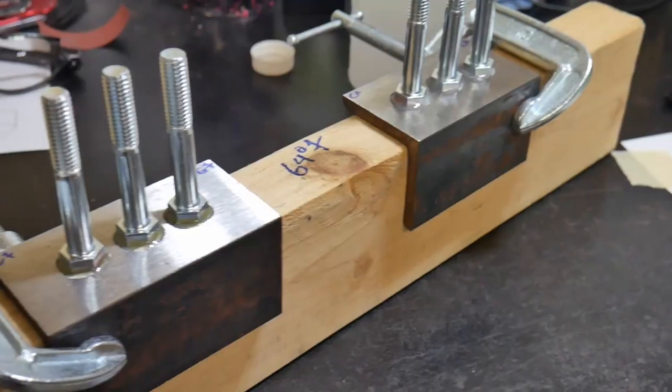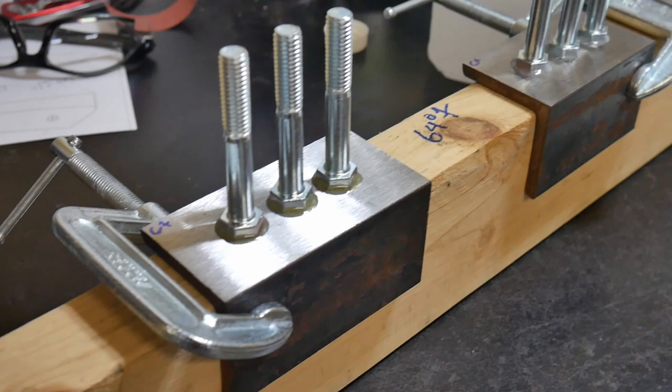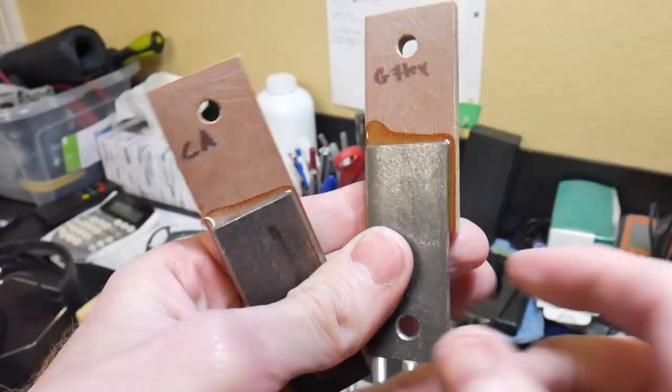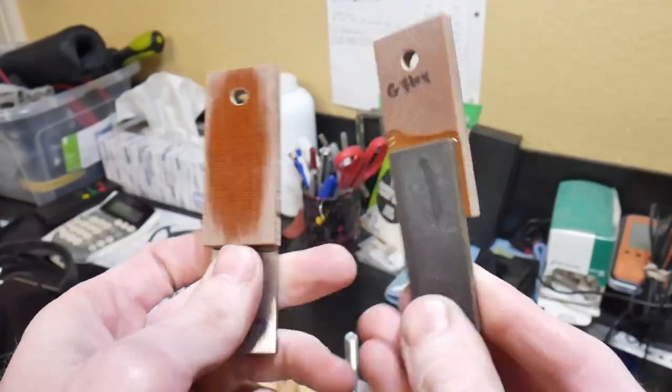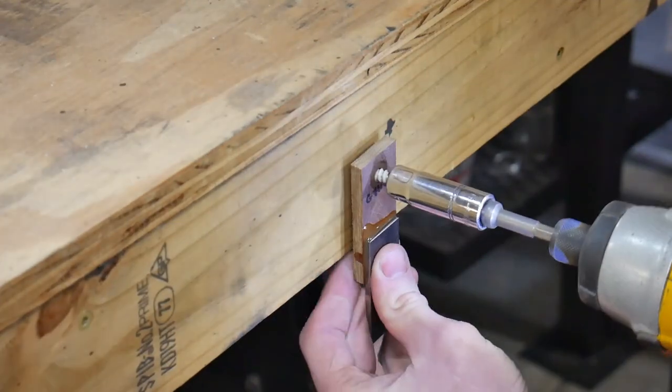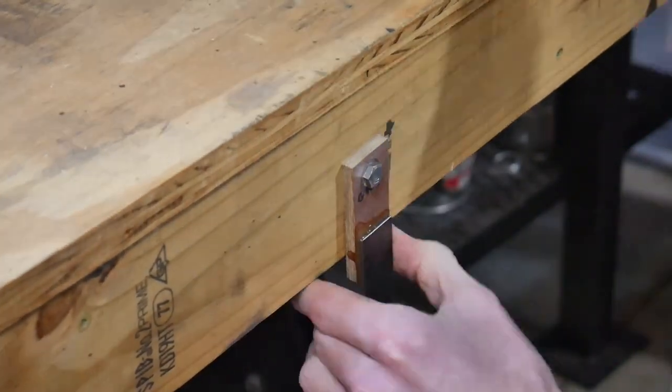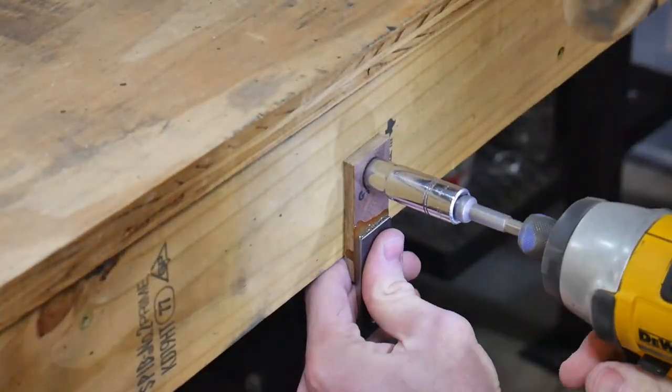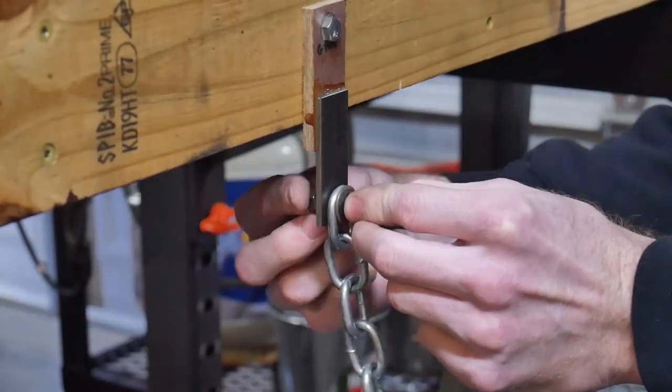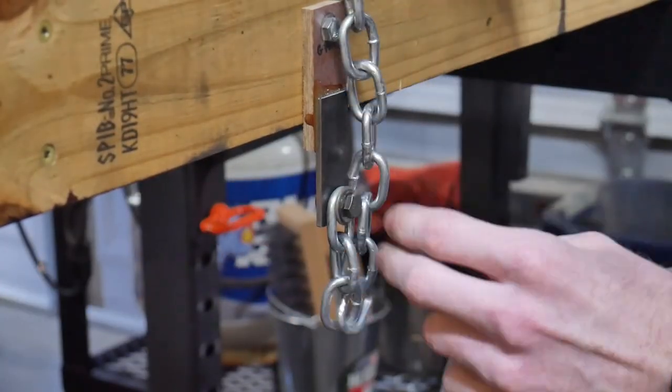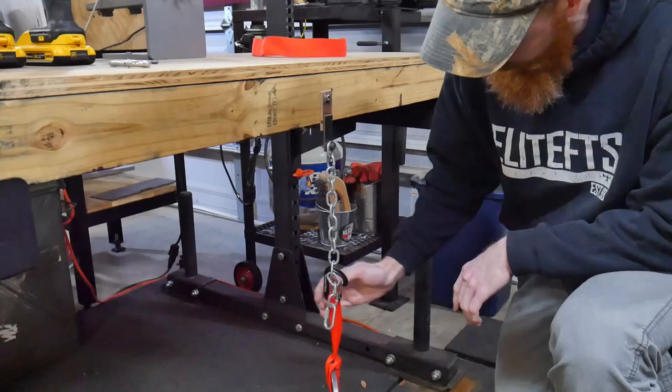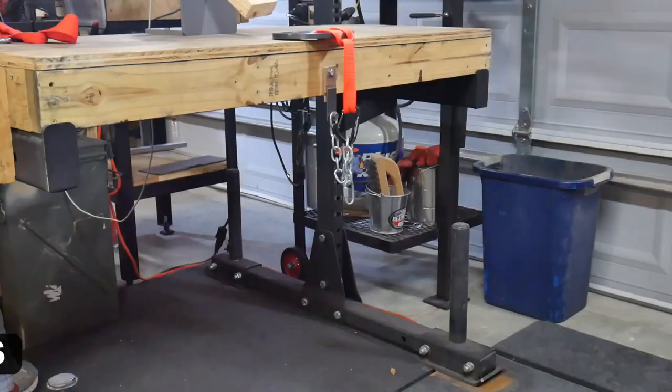After we have the bolts epoxied and the first testing media epoxied up, we give it about 24 hours to cure and then we're going to start our testing. So the first test I did was with the first sample here, I screwed it into my workbench, attached a chain to the bottom and then we're doing some drop testing with weights.